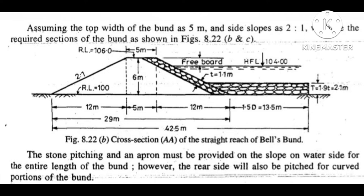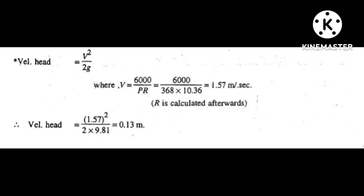Cross section of the straight reach of Guide Bund. Stone pitching and an apron must be provided on the slope on the water side for the entire length of the band. However, the rear side will also be pitched for curved portions of the band. Velocity head is equal to V squared by 2G. Therefore V is equal to 1.57 meters per second. Velocity head is equal to 0.13 meters.